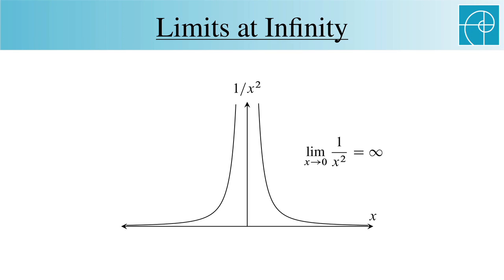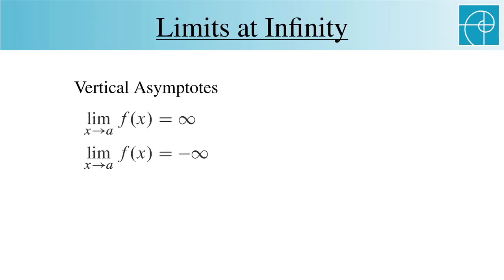which show up in a case such as 1 over x squared, where the function has a vertical asymptote at x equals 0. When there's a vertical asymptote, we're talking about one of these two limits.